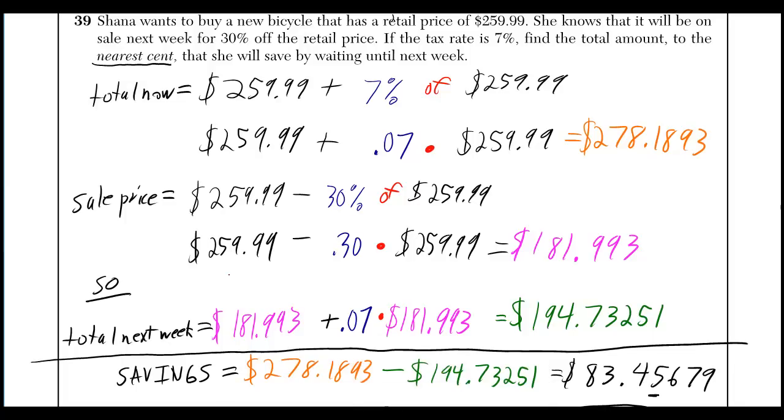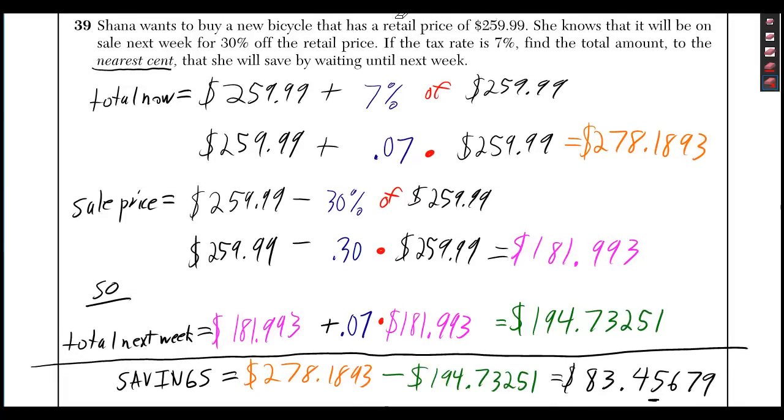Shana wants to buy a new bicycle that has a retail price of $259.99. She knows that it will be on sale next week for 30% off the retail price. If the tax rate is 7%, find the total amount to the nearest cent that she will save by waiting until next week.